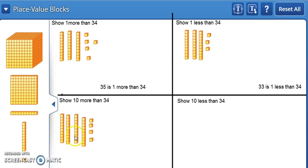Now we count: 10, 20, 30, 40, 41, 42, 43, 44. 44 is 10 more than 34.